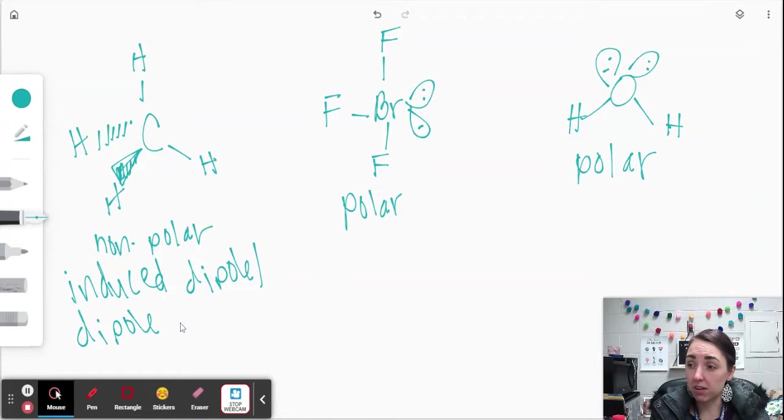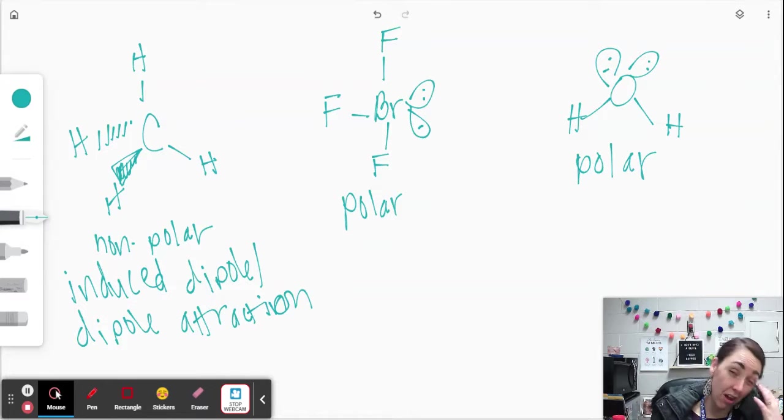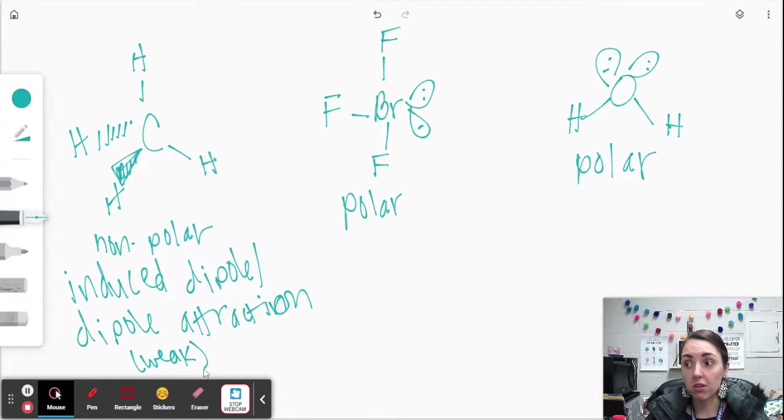Induced and temporary are synonymous here. So the electrons are sloshing around in those bonds, creates a temporary positive side, a temporary negative side, and that could create one of those opposites attract situations. But since it's just temporary, that's going to be a pretty weak attraction. So induced dipole-dipole attractions are weak, and those happen in all molecules, but it's the only attraction happening in nonpolar molecules.